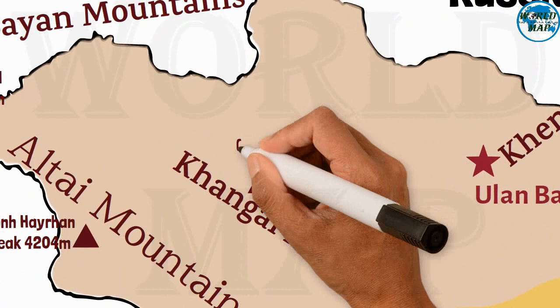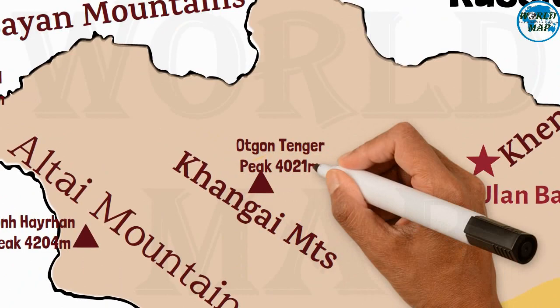Ötgöntenger Peak — its height is 4,021 meters.